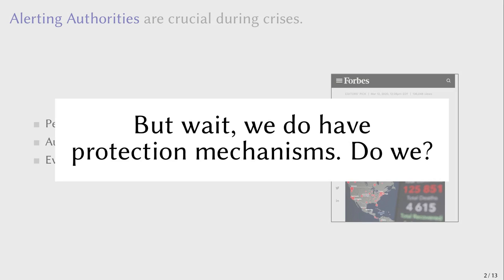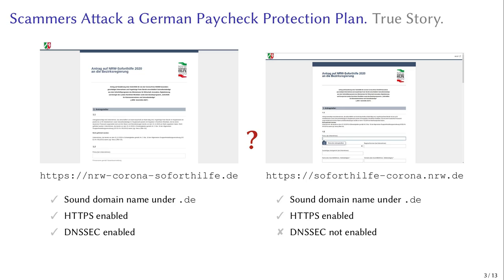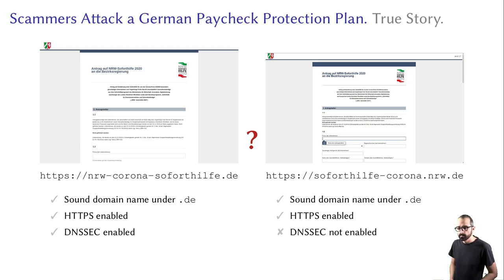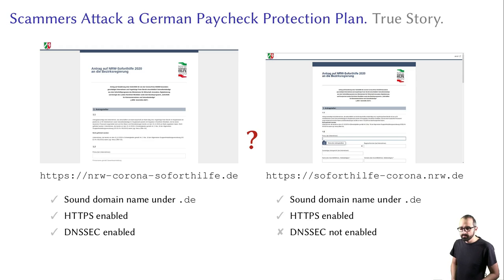You would say we do have protection mechanisms for that. To make a point, here you can see a screenshot of two websites claiming to be the legitimate portal for the paycheck protection plan in one of Germany's states. Both websites look exactly the same, both are under Germany's .de namespace, both have HTTPS enabled with a green padlock, and a tech-savvy user could even verify that one of them — which turns out to be the fraudulent spoofed domain — is even securely delegated. The fraudulent website managed to defraud 4,000 applicants, and the scammers remain unknown until today.